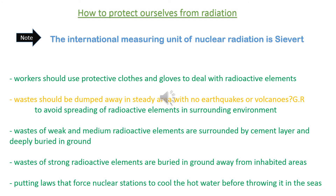Means of protection from radiation pollution: Workers with radioactive elements in labs and hospitals should wear radiation-protective gloves, clothes, and masks. Radioactive waste should be kept away from underground water paths to prevent pollution. Nuclear waste burial depends on radiation level: mild nuclear waste is surrounded by a cement layer or rocks, while strong nuclear waste is buried deeply in the ground.